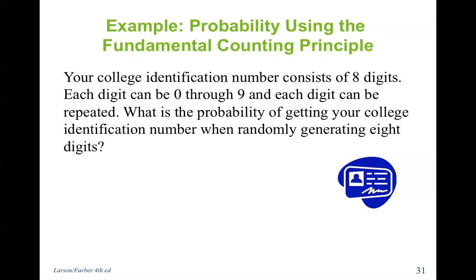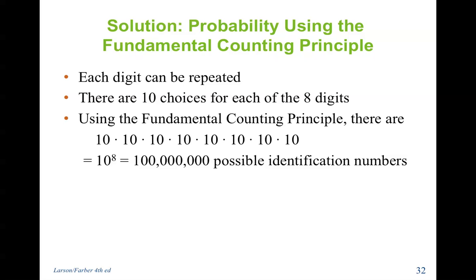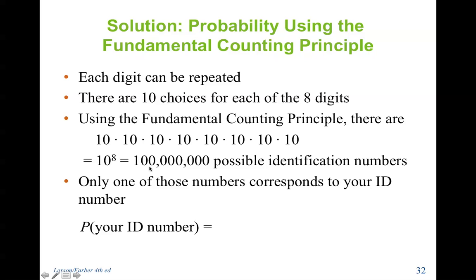Your college identification number consists of 8 digits. Each digit can be 0 through 9 and each digit can be repeated. What is the probability of getting your college identification number when randomly generating 8 digits? Each digit can be repeated. There are 10 choices for each digit, 0 through 9. We have to count 0 as a possible choice. Using the fundamental counting principle, there are 10 choices for the first place, 10 for the second, 10 for the third, fourth, fifth, sixth, seventh, and eighth. So when I multiply all these together, that means the same thing as 10 to the 8th. So 100 million possible identification numbers. Only one of those numbers corresponds to your ID. Therefore the probability would be 1 out of 100 million.